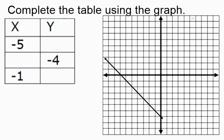In this example we're asked to complete the table using the graph. We have a function shown in the middle of our graph, and functions can be described using coordinates with an x-coordinate and a y-coordinate, where x is our horizontal movement from the origin and y is our vertical movement from the origin.